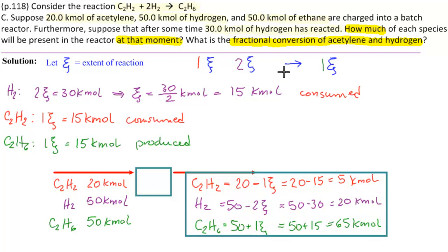Now, the fractional conversion of acetylene and hydrogen, that conversion is always consumed over fed. So fractional conversion of C2H2 is consumed, 15 kilomoles over fed, 20. They're all kilomoles, so they cancel, that is 0.75, or 75%.